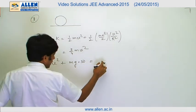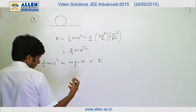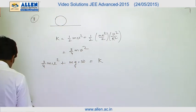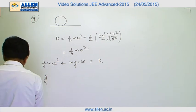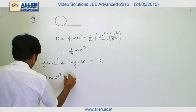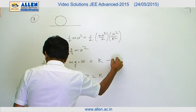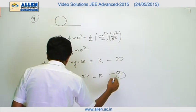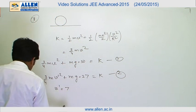And in the another situation, ¾mv'² plus mg into 27 equals to K. On solving we get v' equals to 7. Therefore, the answer is 7.